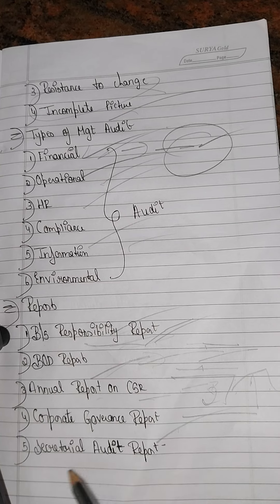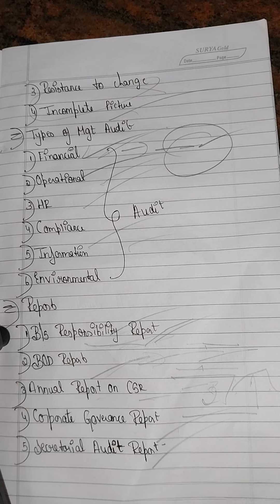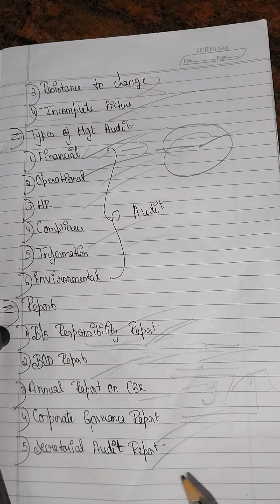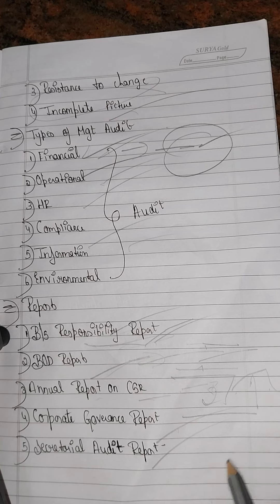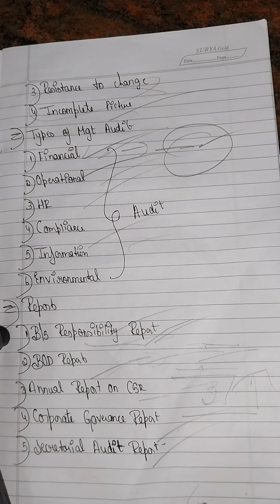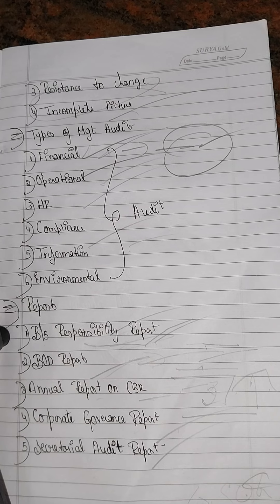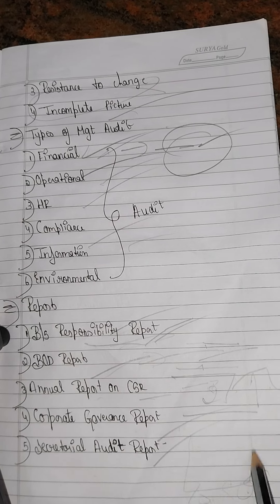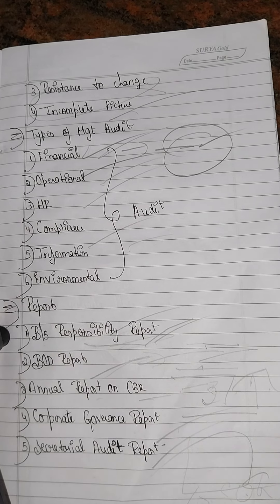The Secretarial Audit Report covers legal and advertising compliance. If the company has to follow up, they can do so with the secretary. Companies with paid-up capital of 50 crores or more are required to follow up with a secretarial audit.